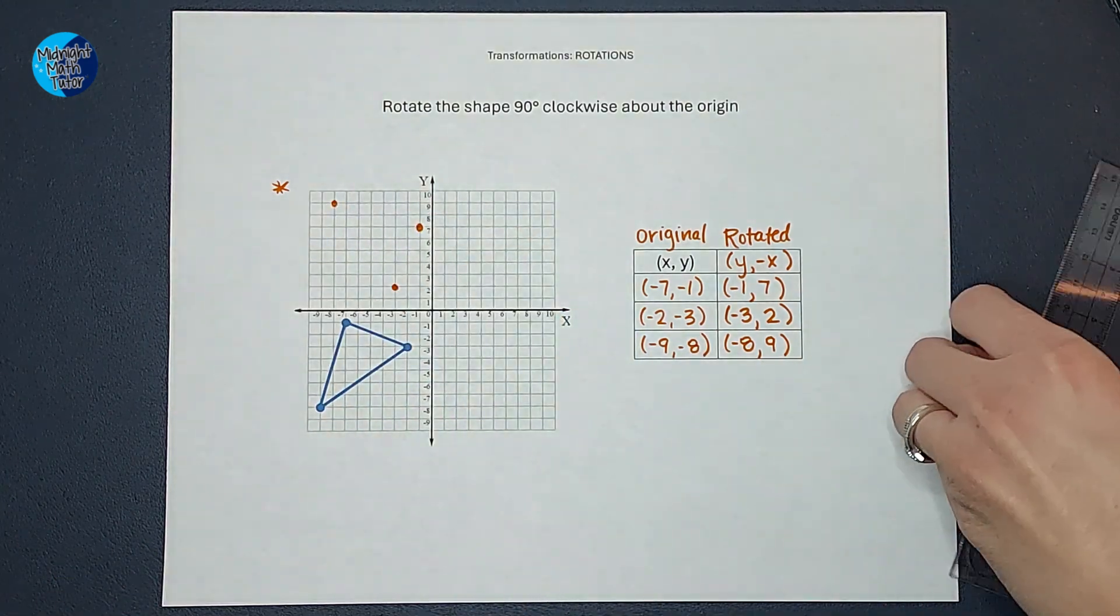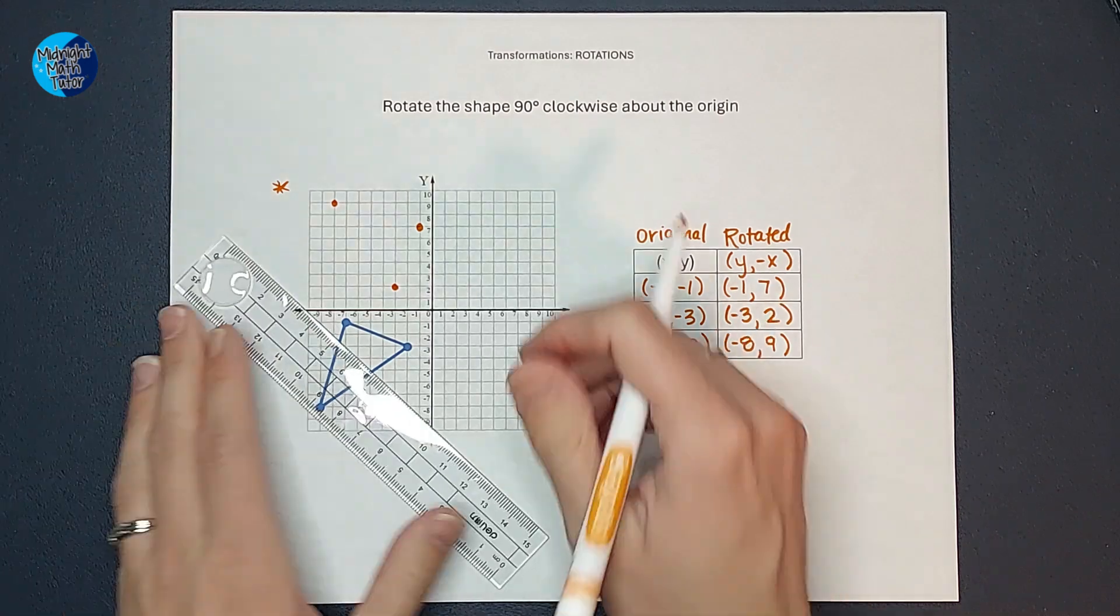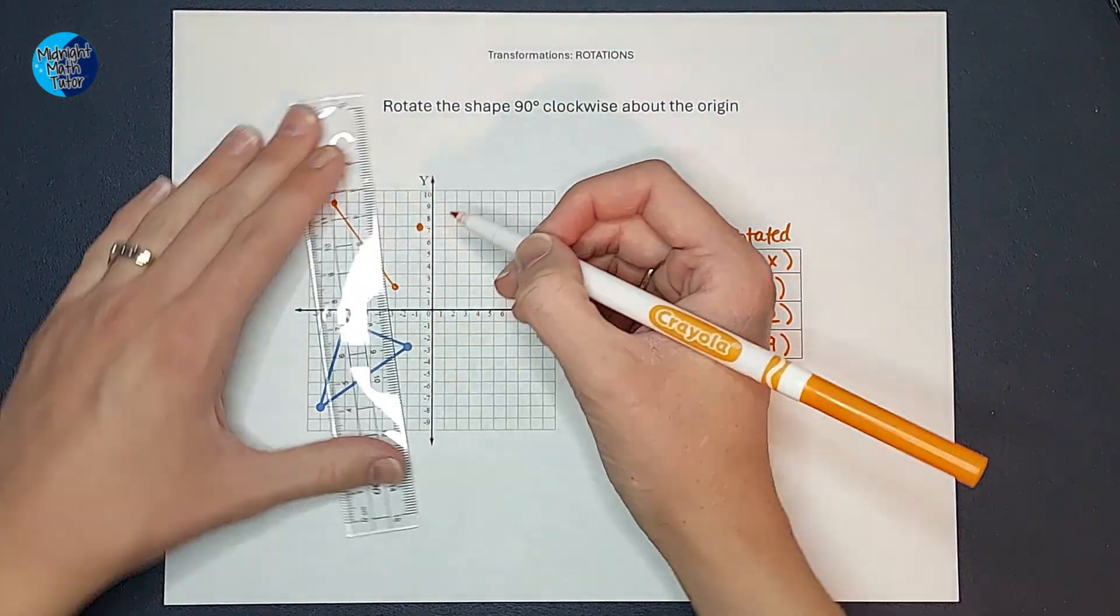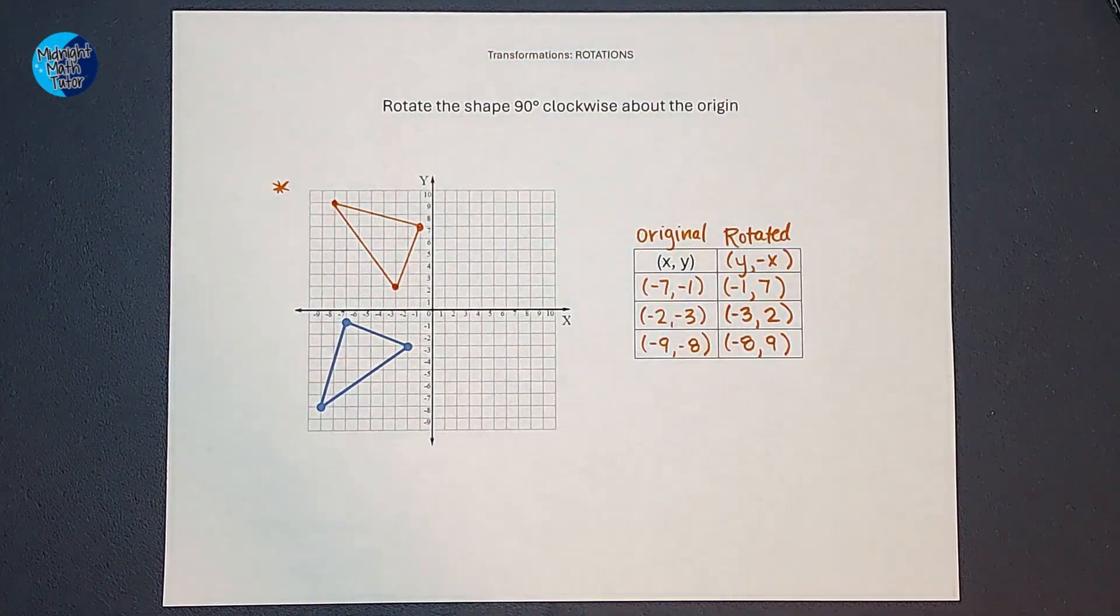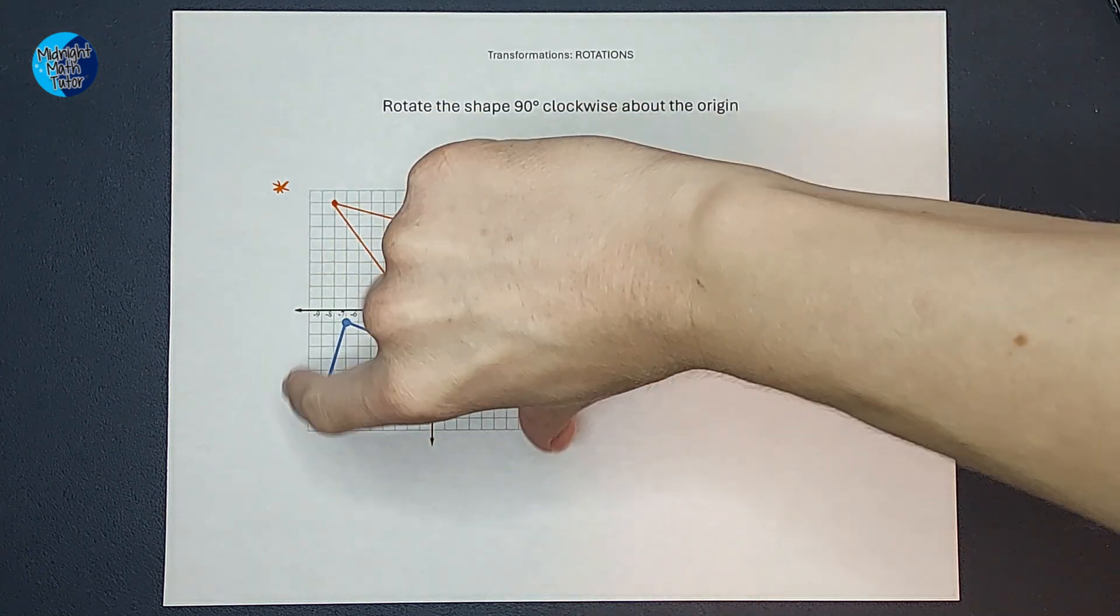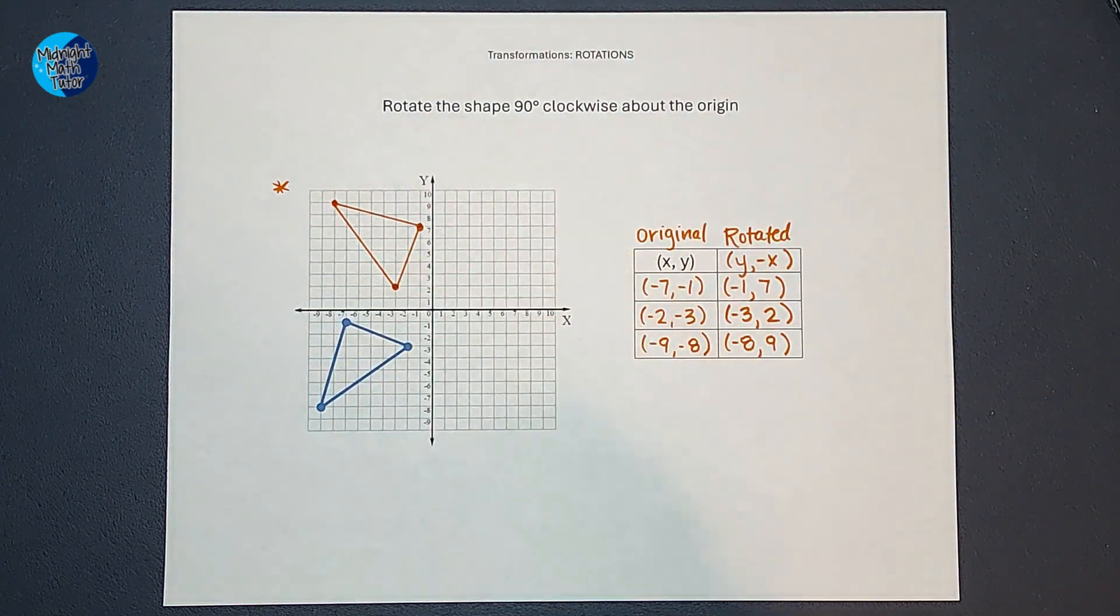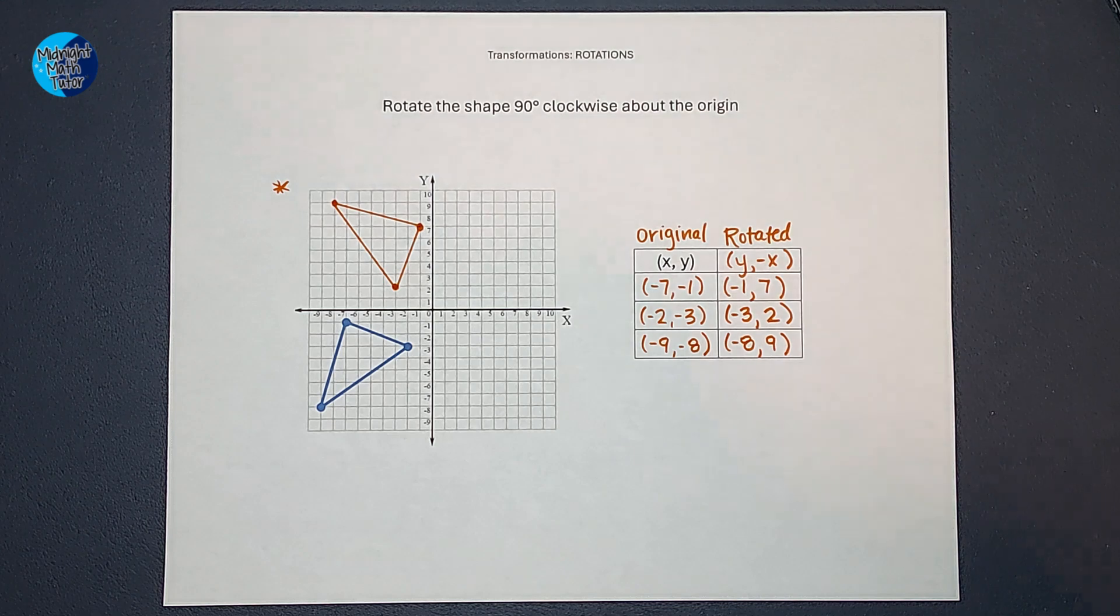All right, and then connect our dots. And there we go. Does that look like I took that triangle and rotated it 90 degrees clockwise about the origin? Pretty awesome.